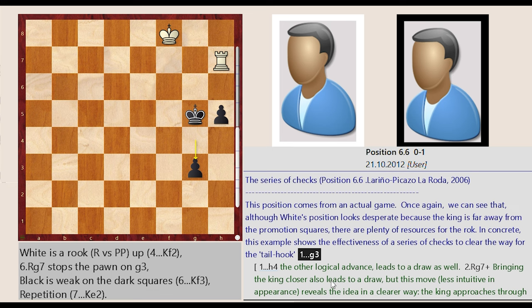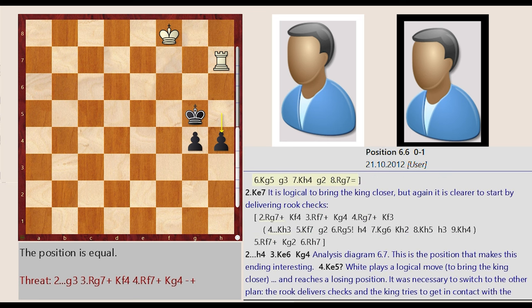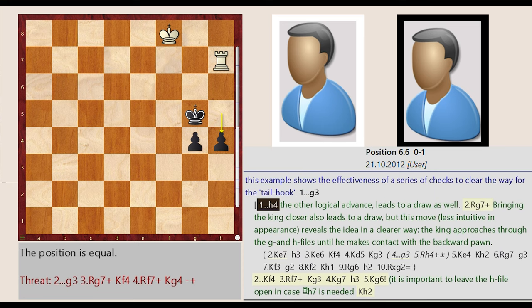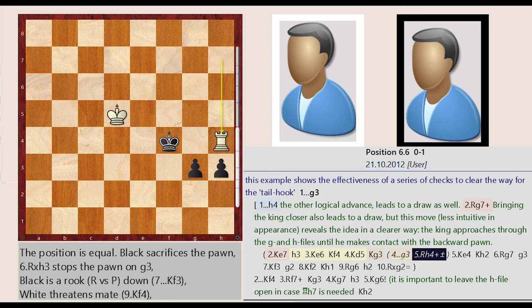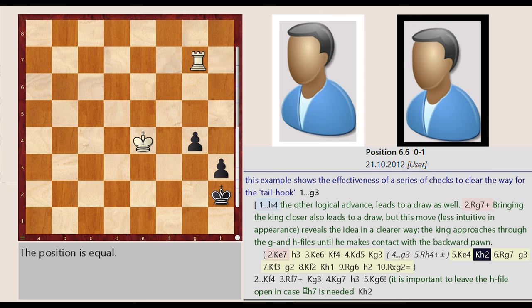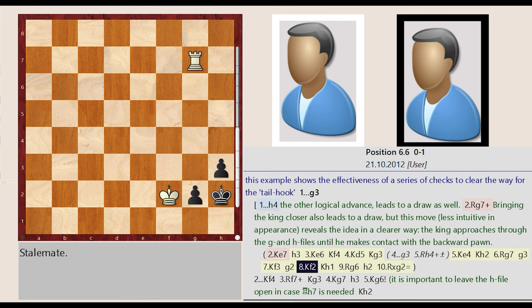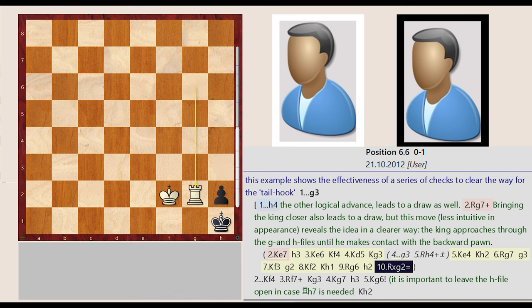G4 g3, King f8 e7, H4 h3, King e7 e6, King g5 f4, King e6 d5, G4 g3, Rook h7 h4, King f4 g3, King d5 e4, King g3 h2, Rook h7 g7, G4 g3, King e4 f3, G3 g2, King f3 f2, King h2 h1, Rook g7 g6, H3 h2, Rook g6 captures g2.